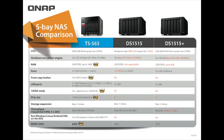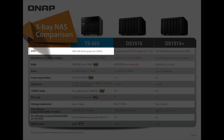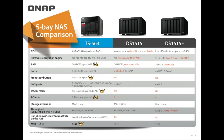Today we're going to start off with the CPU of each of the systems. The TS-563 comes with an AMD 64-bit quad-core 2 GHz processor. The Synology DS-1515 comes with an ARM 32-bit quad-core processor at 1.4 GHz. The DS-1515+ comes with an Intel 64-bit Atom quad-core 2.4 GHz processor. We can see some of the differences and similarities of the CPUs.